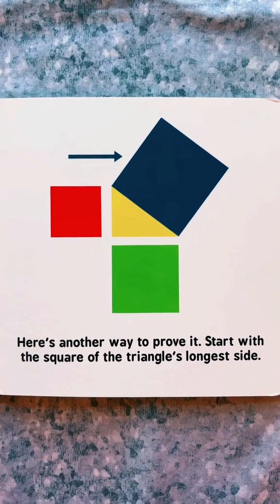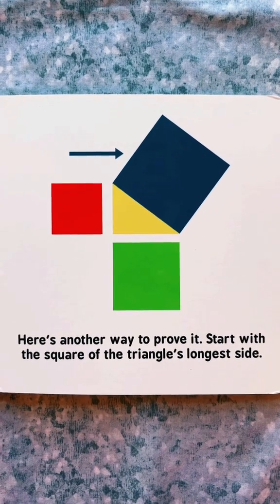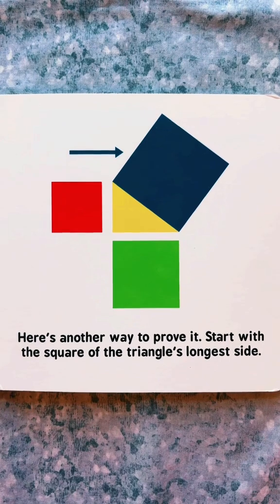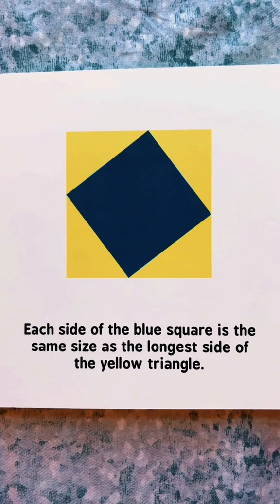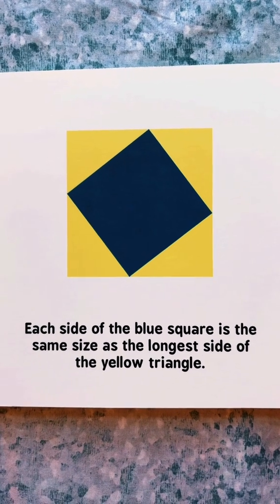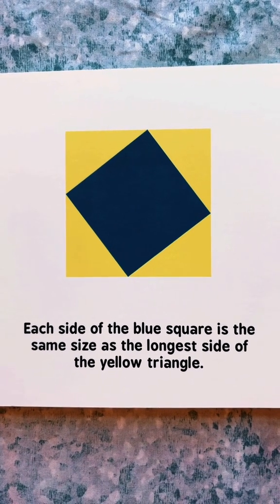Here's another way to prove it. Start with the square of the triangle's longest side. Each side of the blue square is the same size as the longest side of the yellow triangle.